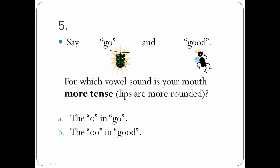5. Say go and good. For which vowel sound is your mouth more tense and your lips are more rounded? Your mouth should be more tense and your lips should be more rounded for the O in go. Again: go, good.